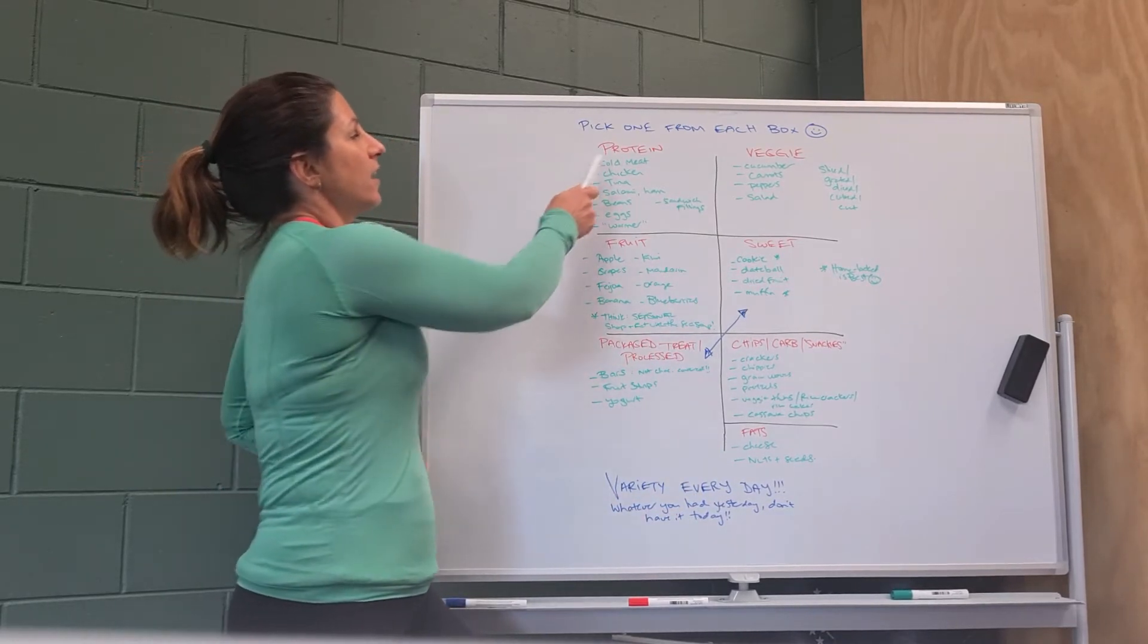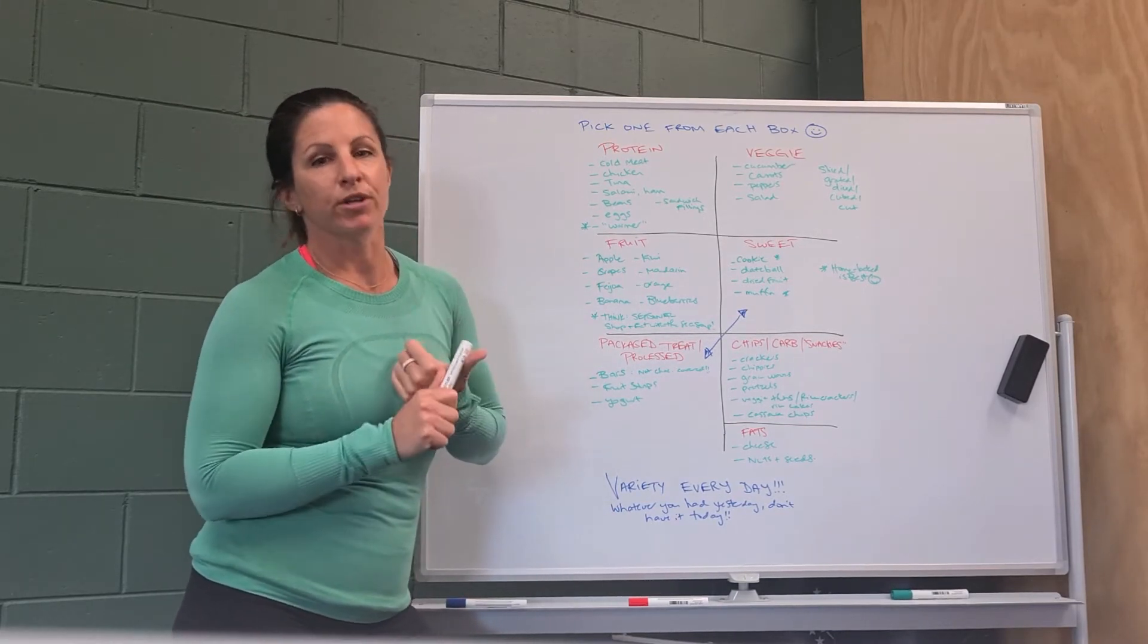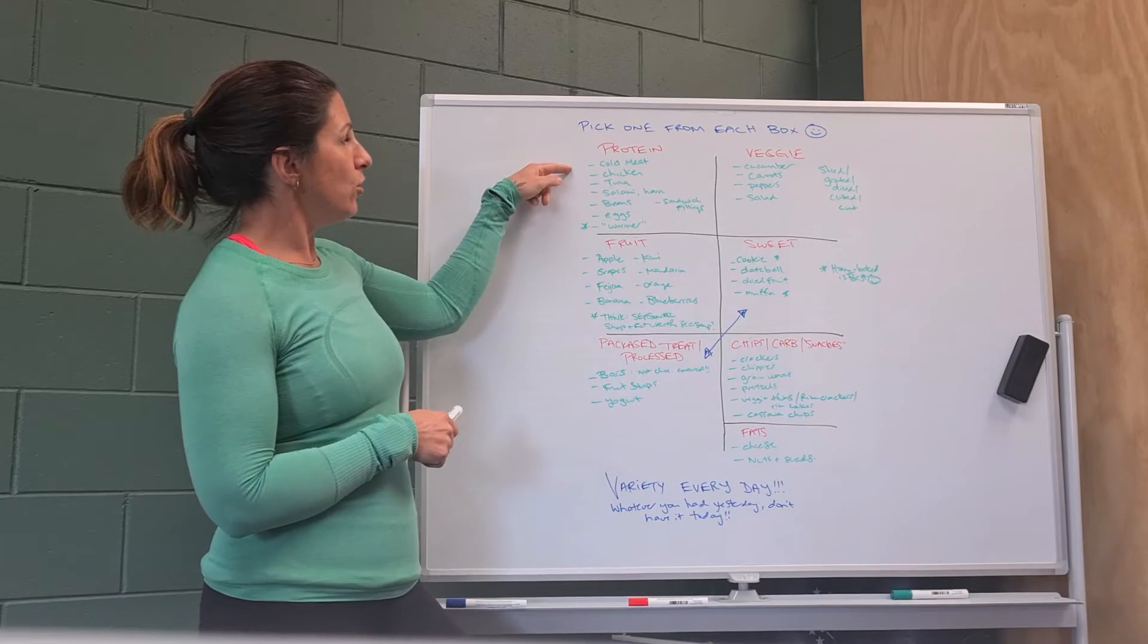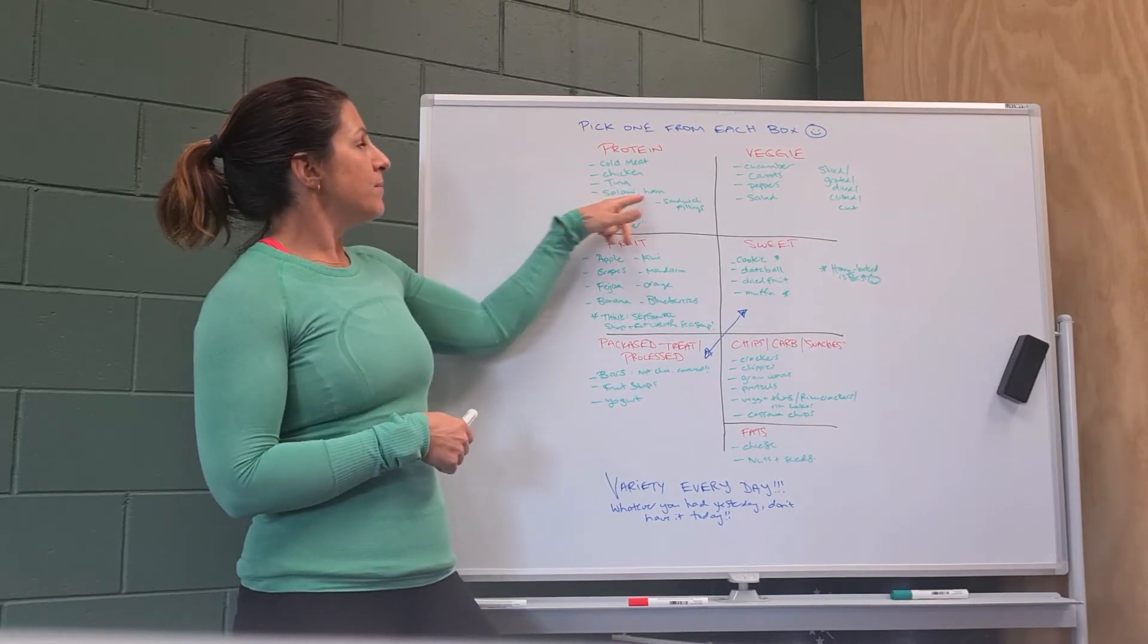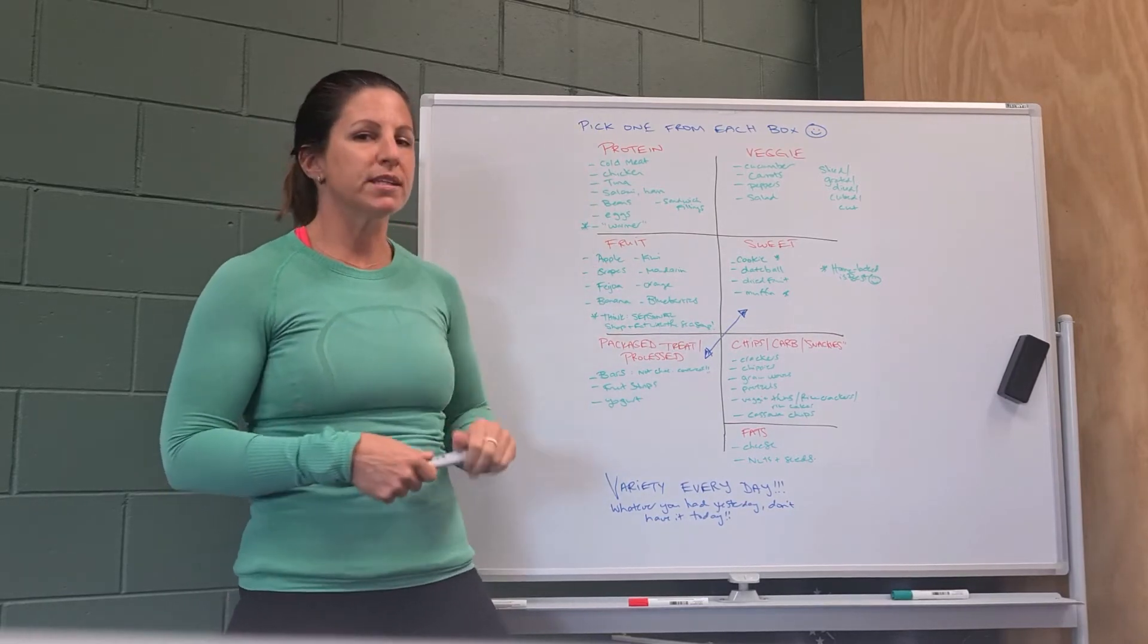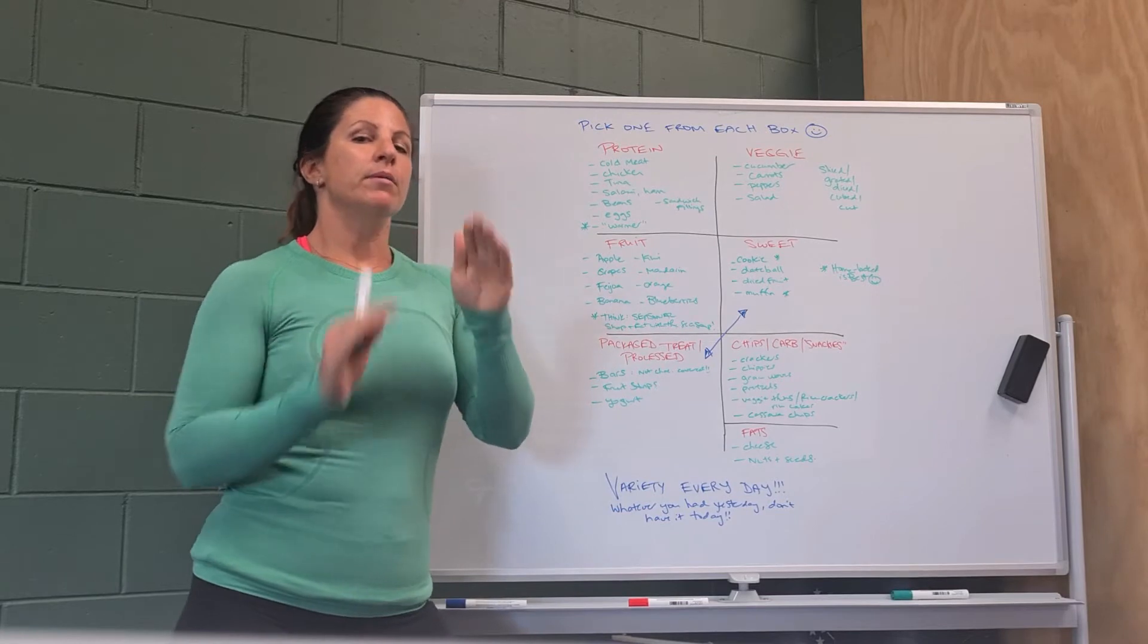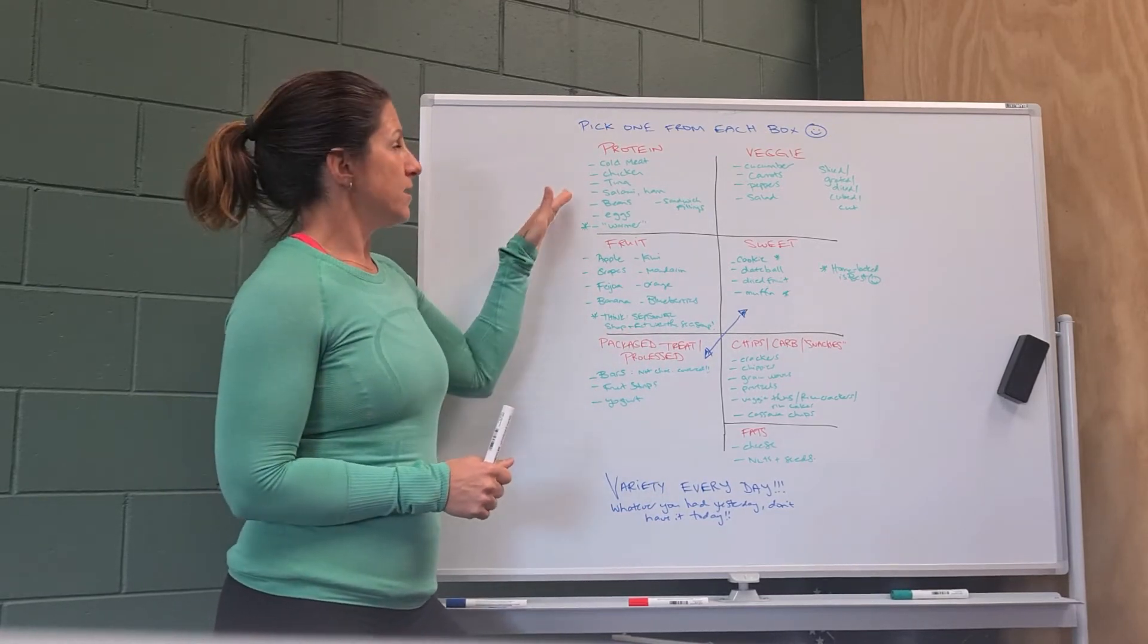Okay, so the first category is protein and this is one of the hardest ones but this one's really important. Protein can be cold meat, chicken, tuna, salami and ham, those kind of processed meats. They're not as healthy, however they still have protein in them so we eat them in moderation, but they're really good to be indicated here.